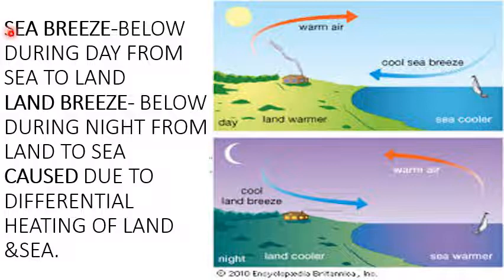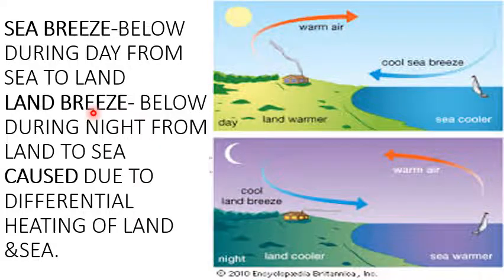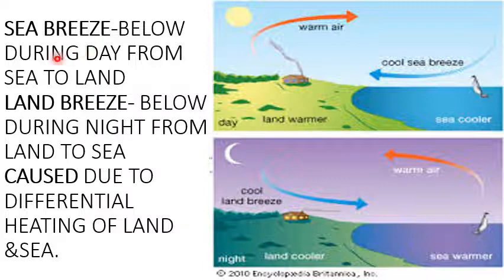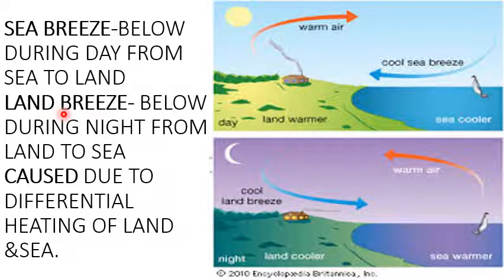Now, sea breeze and land breeze — they are examples of seasonal winds or periodic winds. Winds are named after the direction or the place from where they originate. Sea breeze blows from sea to land during the day, whereas land breeze blows from land to sea during the night.